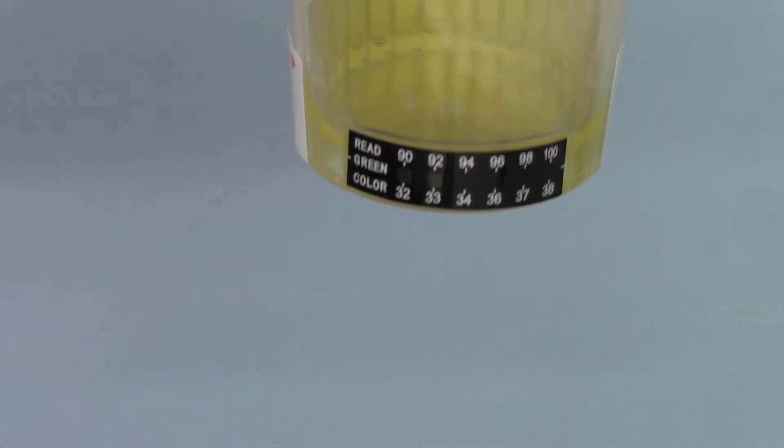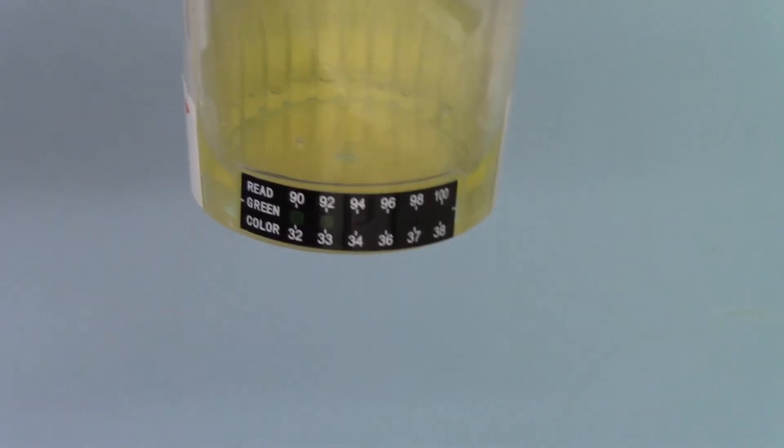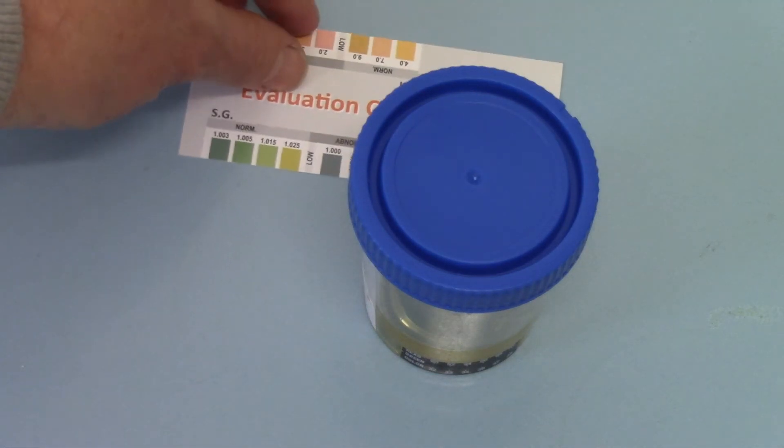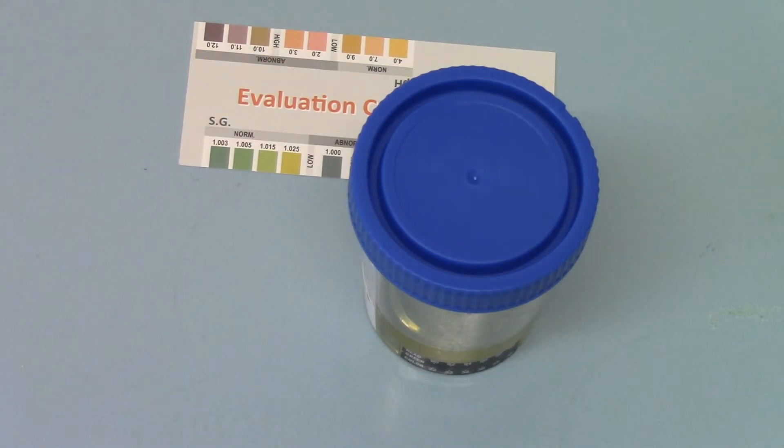That combined with the temperature test is a good level of checks to make sure that the sample you're screening and interpreting the results on is a fresh, undiluted urine sample from the donor. It's just reassurance of the validity of the test results for the drug screens that you've run.